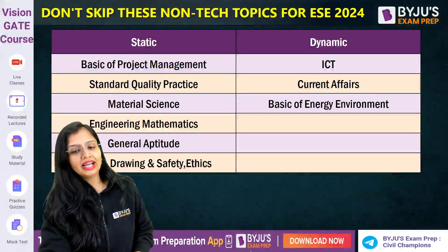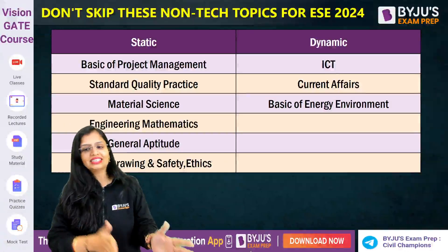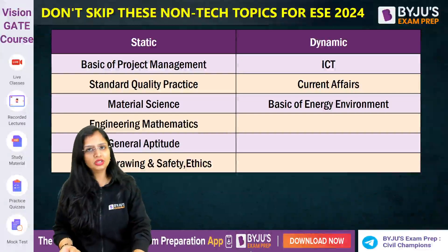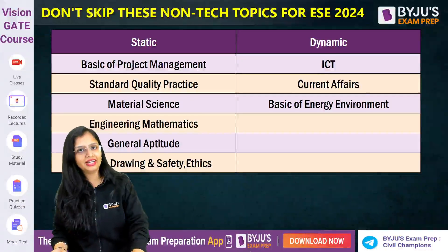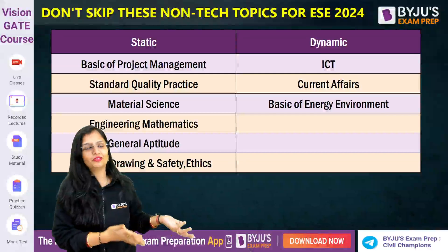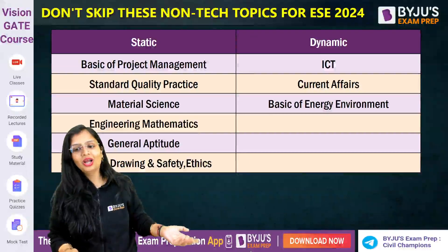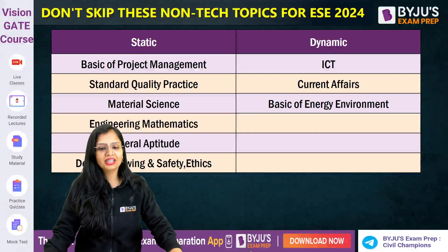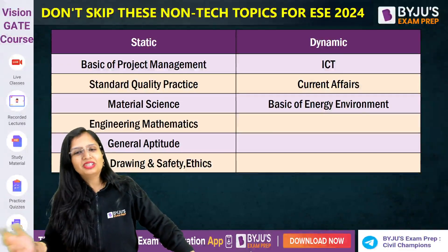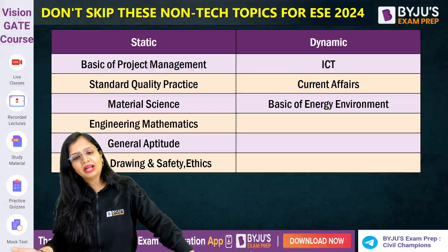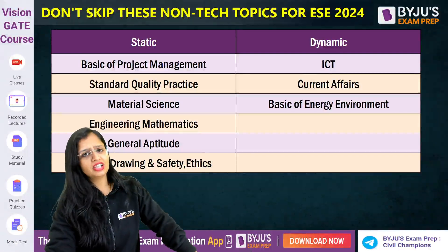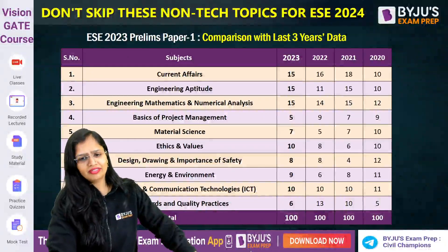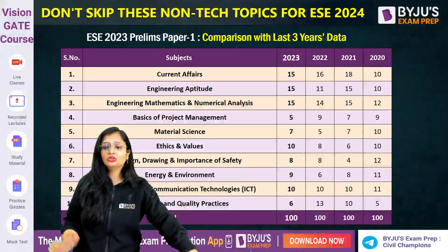There are static subjects and dynamic subjects. Dynamic subjects, like Current Affairs, require constant updating — you can't study the current affairs of 2022 or 2021 right now. Similarly, for Basis of Energy and Environment, new conventions and protocols that have been released need to be studied. Project Management, Material Science, and Mathematics are static subjects — what you studied in school will still help you.